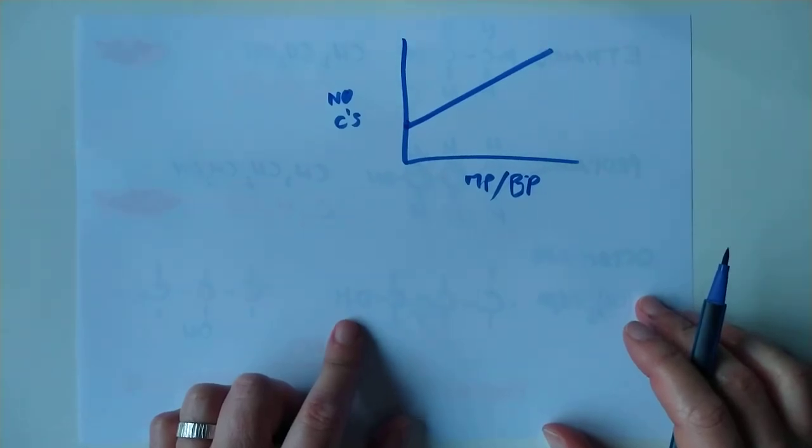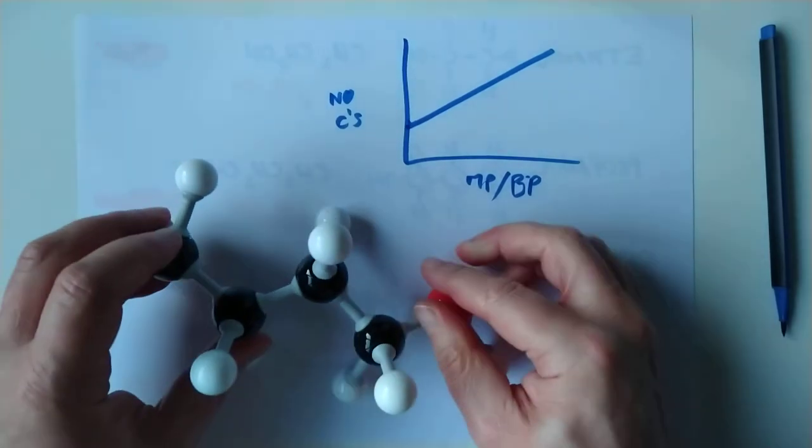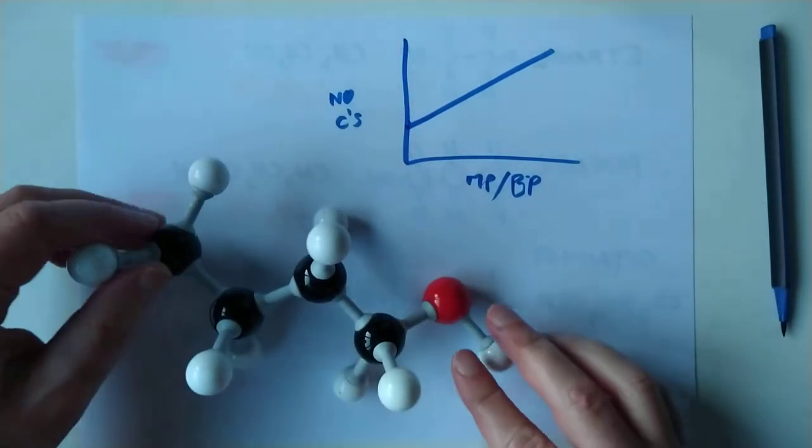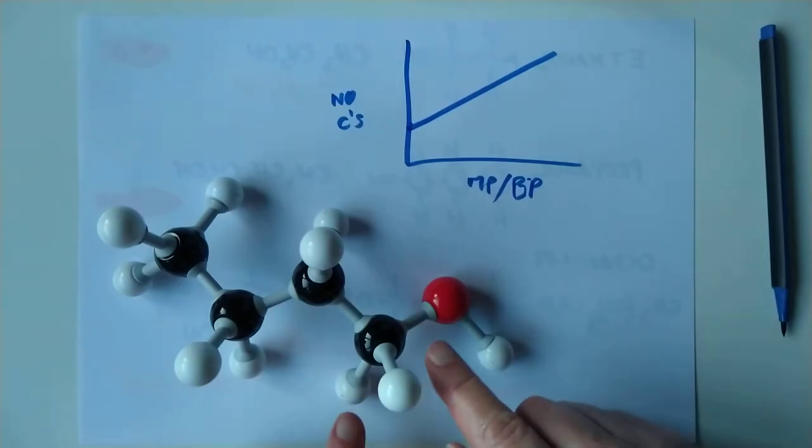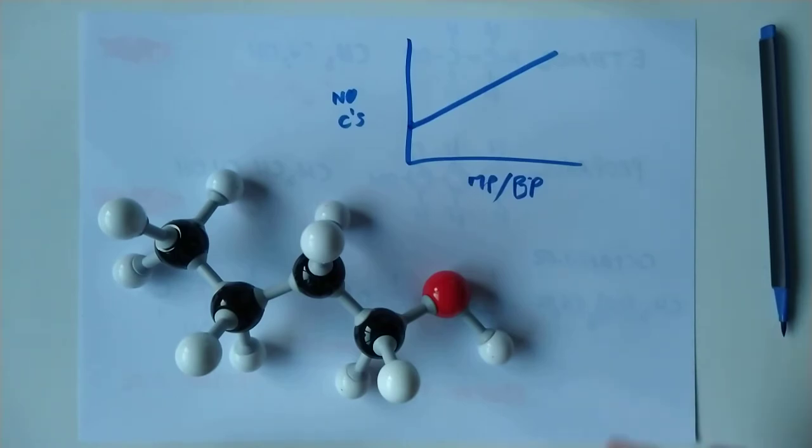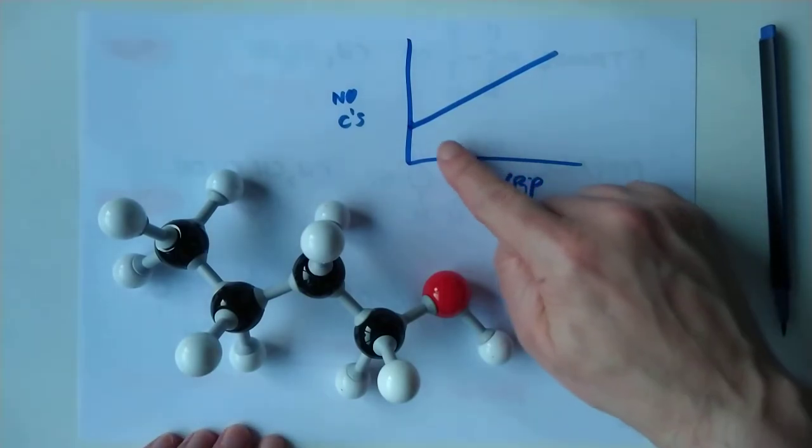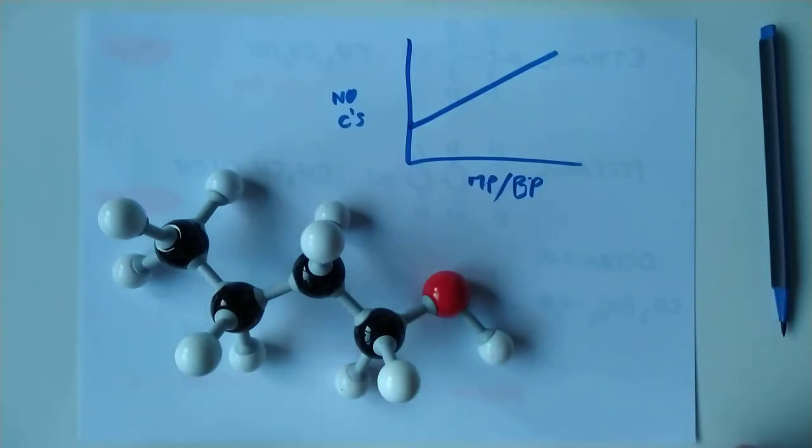The SQA want you to realize that there is a force of attraction between this butanol molecule and its neighboring butanol molecule. And that force is what you break when you boil them because they all fly off individually, separately to each other. Now the more carbons you have, the stronger these forces are. And that is why the boiling points increase as your molecules become larger, because of the strength of these forces.